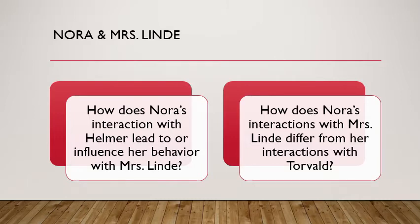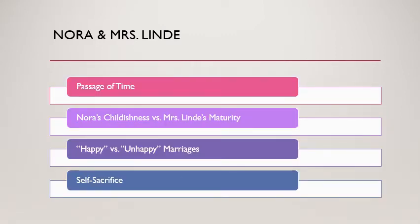After her conversation with Helmer, Nora has her first conversation with Mrs. Linda, her friend from childhood and school. How does her conversation with Helmer lead into this one — both in terms of her mood and what she was talking about, and more figuratively? How does this show us a different side of Nora, a different aspect of her character and world? How do her interactions with Mrs. Linda differ from those with Torvald — both literally in topics and power dynamics, and as stages in Nora's journey through the play?